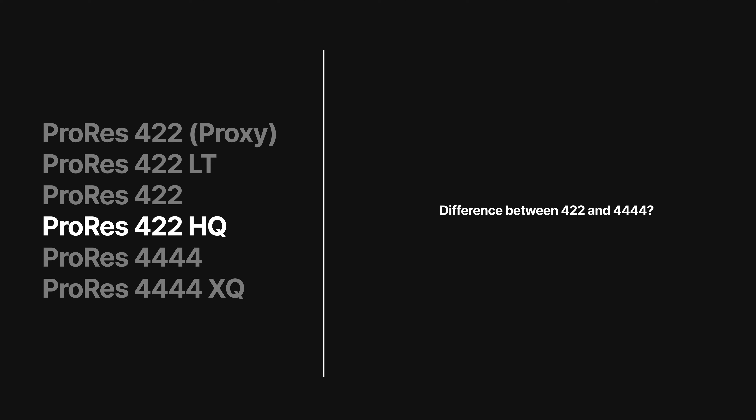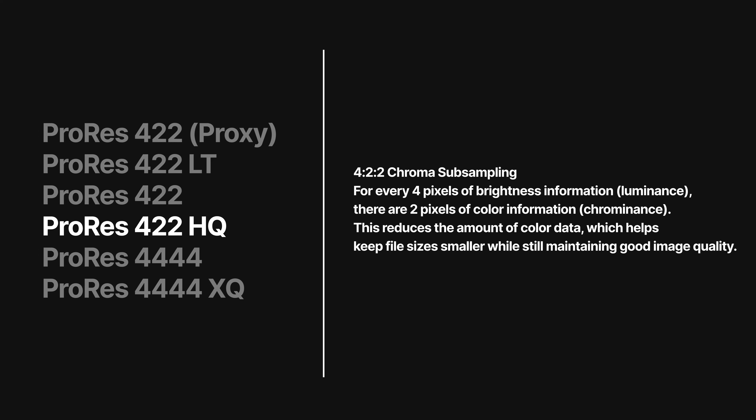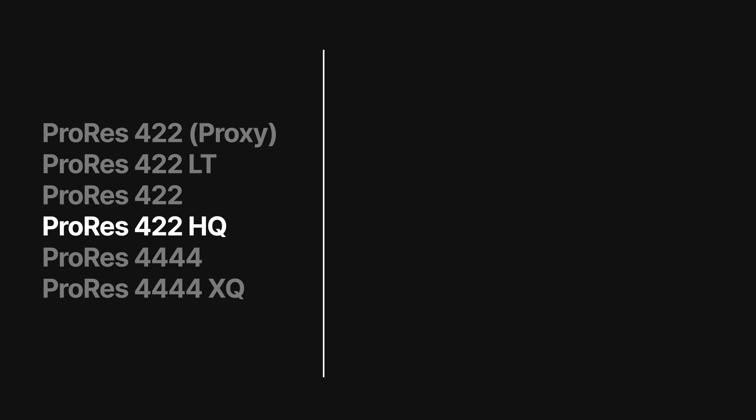Let's talk about the difference between the 422 and the 4444 options. 422 has 4:2:2 chroma sub-sampling. This means that for every 4 pixels of brightness information — also known as luminance — there are 2 pixels of color information. This reduces the amount of color data, which helps keep file sizes smaller while still maintaining good image quality.